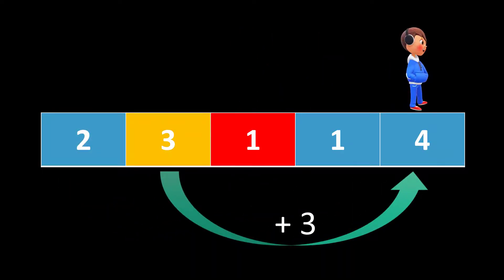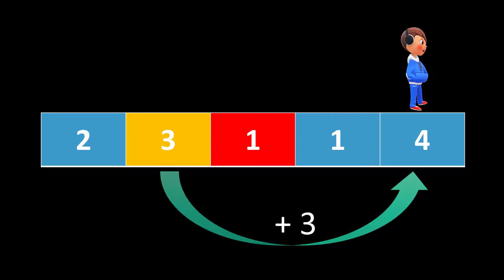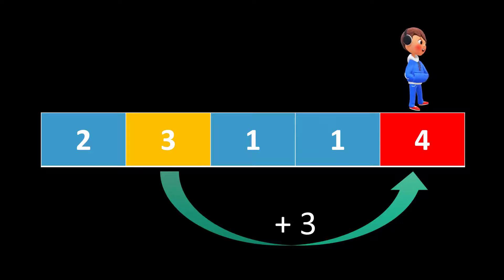Now we move to the next index and see that from index one we can jump three steps. This index one is within our current maximum reach, meaning during the process if we had taken a different number of steps, we could have landed on index one. So we can use the jumps available at index one, which is three, and move further — reaching index four. We update the max to index four. Since we've reached the last index, we can return true here.